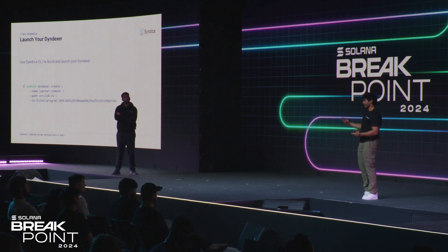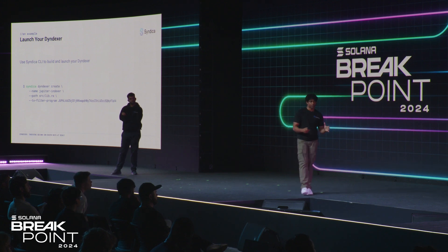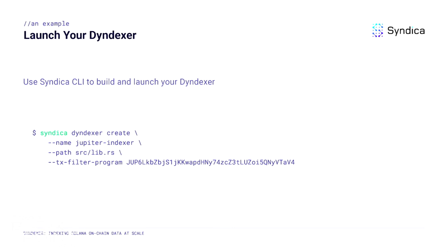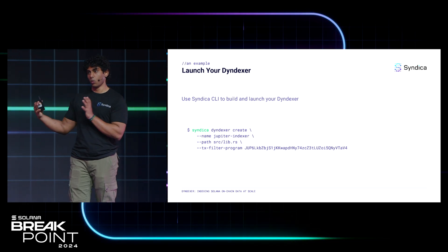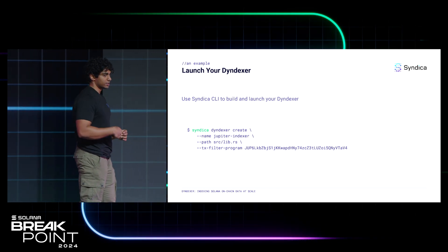One thing we've had to build to make the dev flow as easy as possible is a CLI tool. We're using the Syndica CLI indexer create command to create this indexer. It's pretty simple: you give your indexer a name — we call it the Jupyter indexer. The next thing is to point to the source code where that entry point lives. We're using Rust as an example, but since we use WASM under the hood, you can write your indexers in whatever language you prefer, as long as it compiles to WASM. The last part is the transaction filter — we only care about transactions that involve the Jupyter program, hence the pub key. Under the hood, this compiles your indexer to WASM, submits that WASM to our infrastructure, and it immediately starts executing, with entries and events getting written to your database.